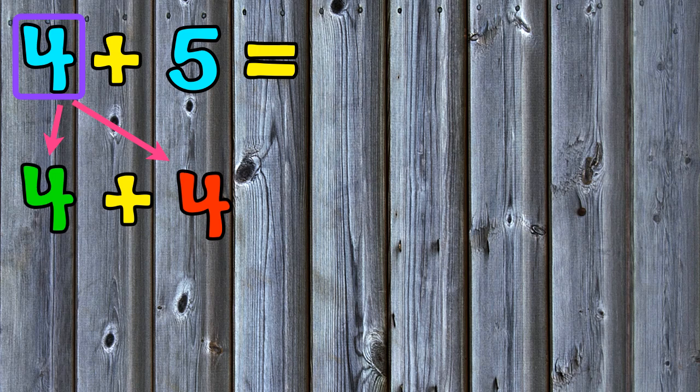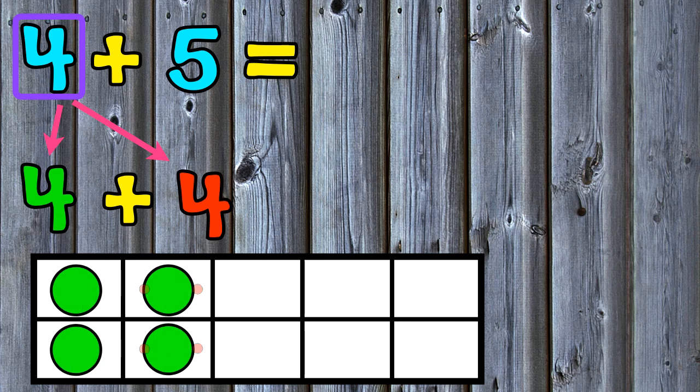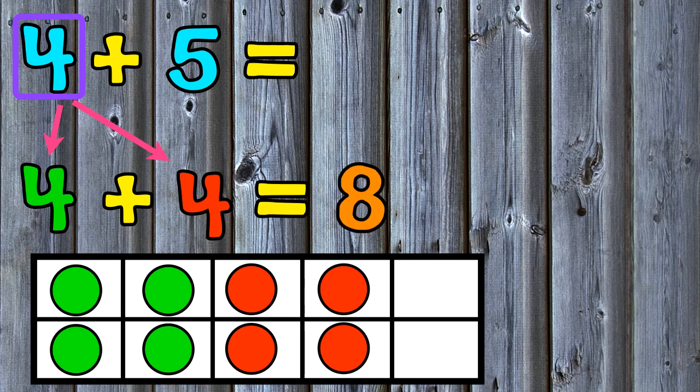I will now show you how to add 4 plus 4 by using a 10 frame. The first addend is a 4, so I will place 4 dots in my 10 frame. The second addend is a 4, so I will also place 4 dots in my 10 frame. When I count them, I can see that 4 plus 4 equals 8.